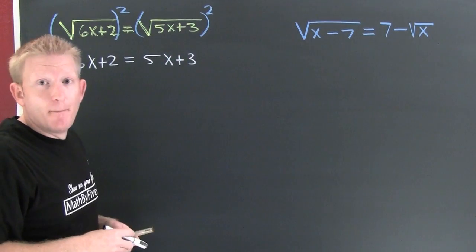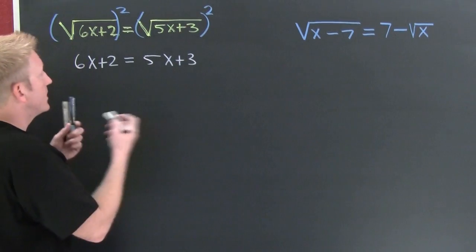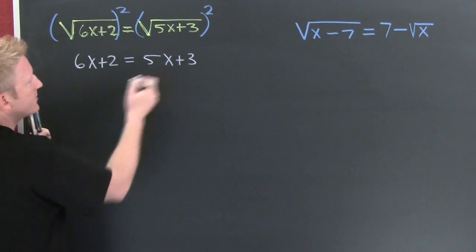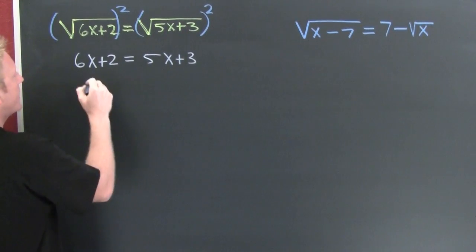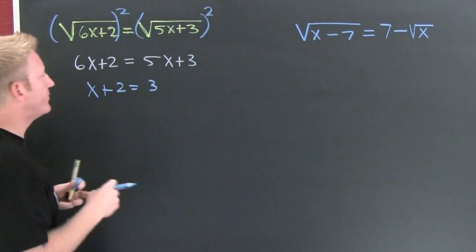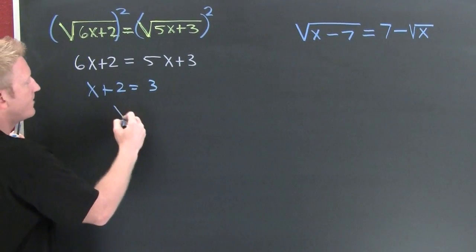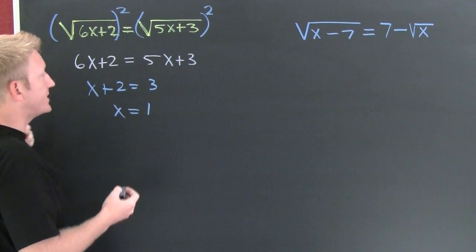Now I got x's on both sides, move them to one side. Subtract off that five x on each side, leaving us with x plus two is three. X is equal to one, subtracting off that two.